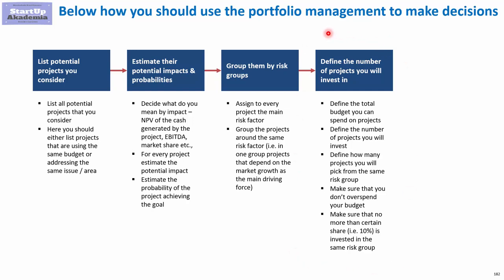Step four is where you define the number of projects you will invest in. We want to define how much risk we are willing to take and spread it, so as not to become a victim of one risk materializing and killing all our projects. The first part of this step is to define the total budget you can spend, then define the number of projects you will invest in, and also define rules on risk spreading — for example, how many projects you pick from the same risk group.